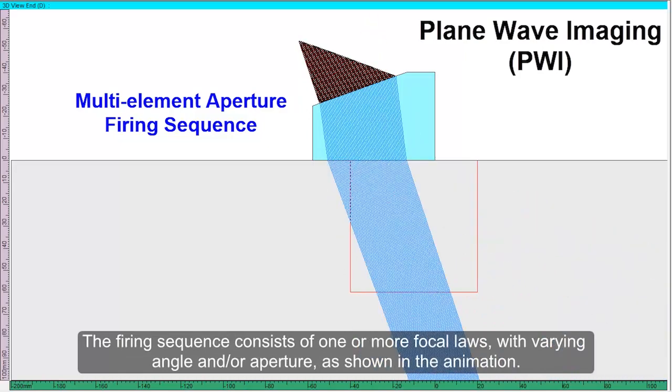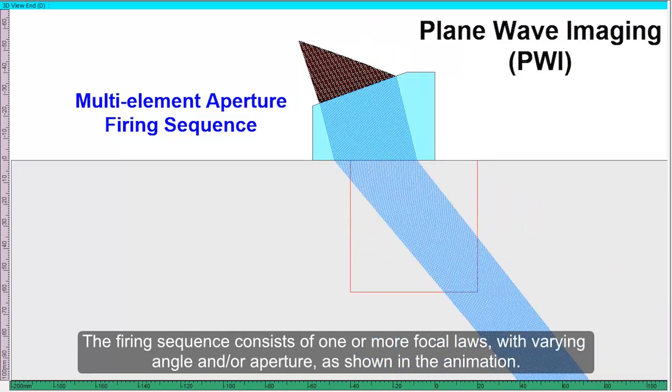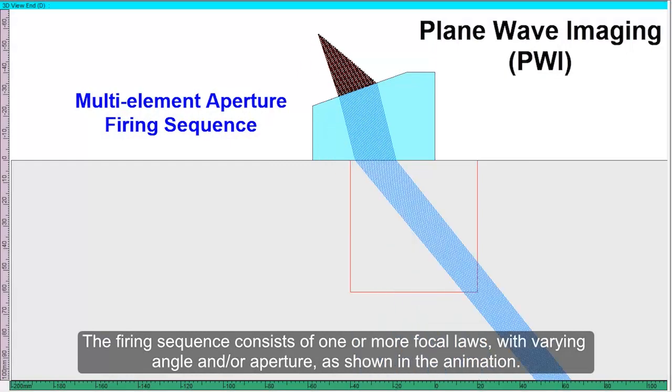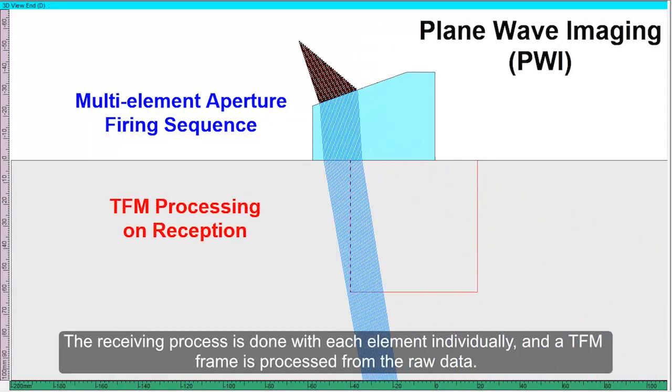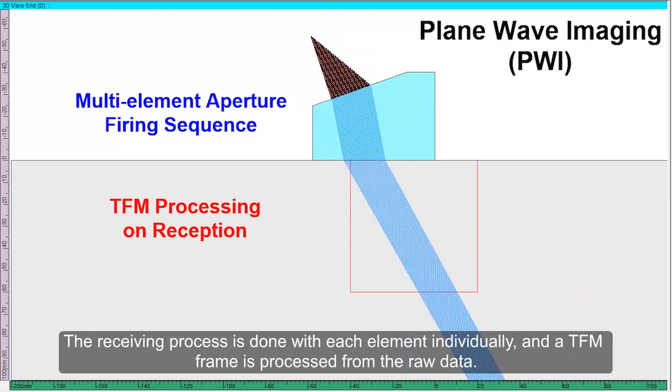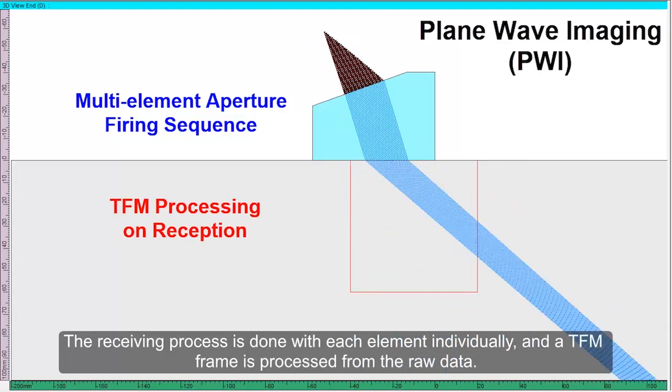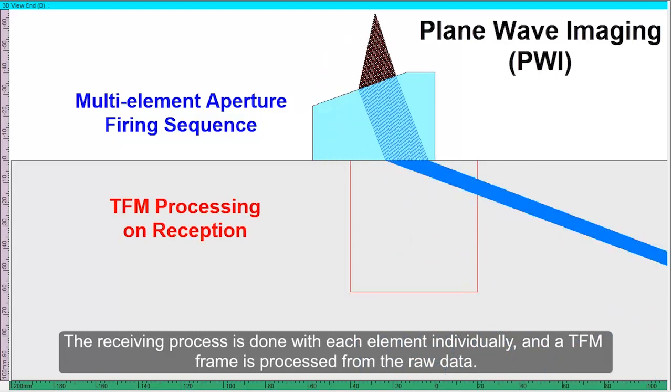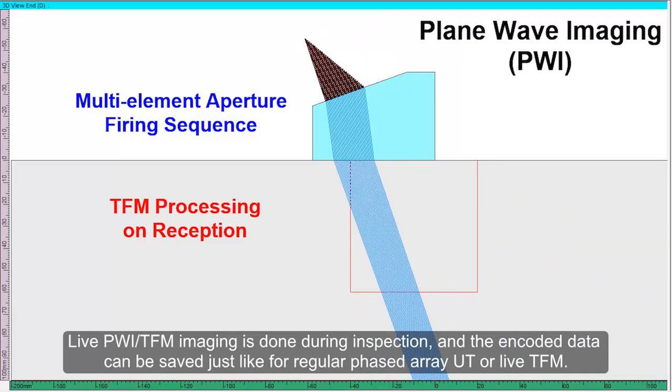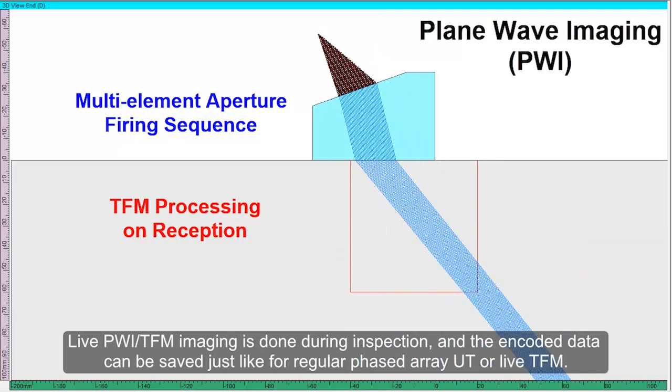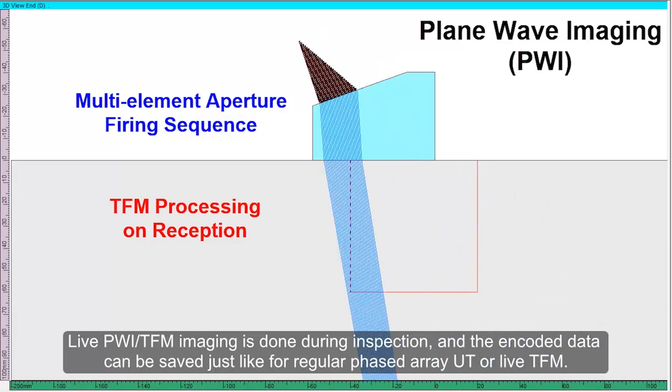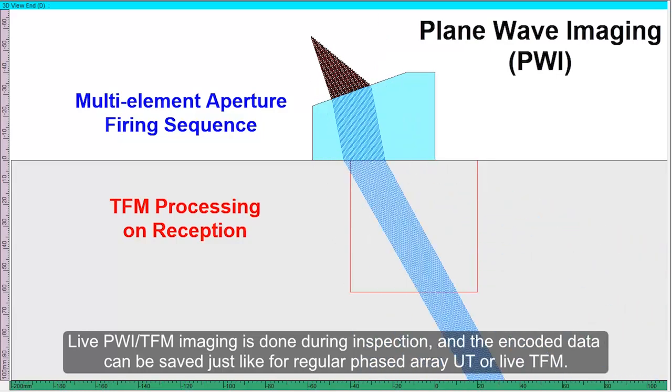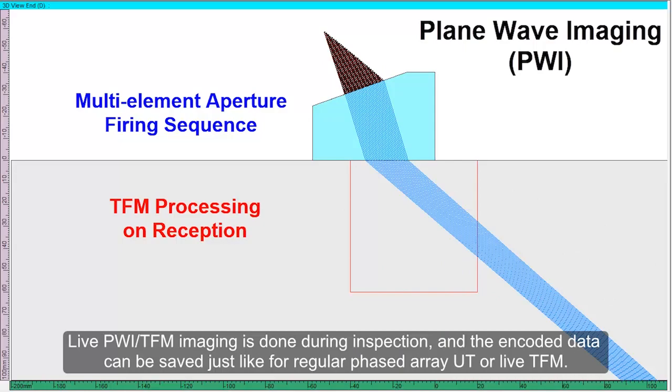The firing sequence consists of one or more focal laws with varying angle and/or aperture as shown in the animation. The receiving process is done with each element individually and a TFM frame is processed from the raw data. Live PWI TFM imaging is done during inspection and the encoded data can be saved just like for regular phased array UT or live TFM.